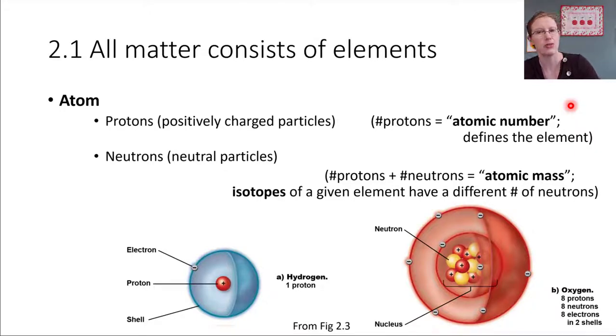And the name for those different varieties is isotopes. We can have different isotopes of a given element, and they're going to weigh different amounts. They'll have a different atomic mass. So the mass of an atom pretty much comes from just the protons and the neutrons. Those are the two primary particles that contribute to mass.